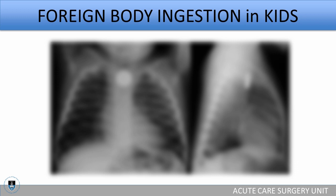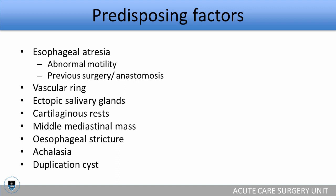In kids, as in adults, there are certain predisposing factors to think about. Less common in kids than adults but still worth considering: esophageal atresia at birth where the patient would have had previous surgery and anastomosis, predisposing the child to narrowing, stricture formation, and abnormal motility. Also vascular ring formation, ectopic salivary glands, cartilaginous rests, a middle mediastinal mass, esophageal stricture, achalasia in kids, and duplication cysts can all predispose the child to foreign body obstruction.